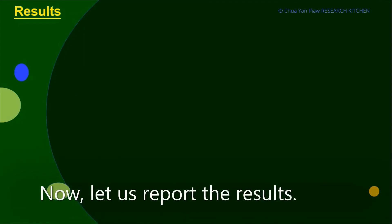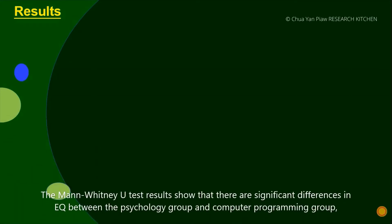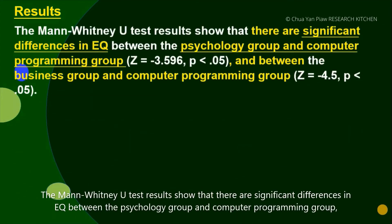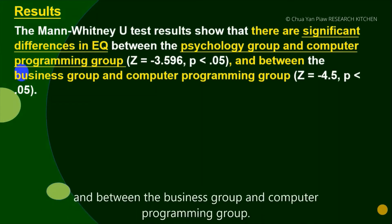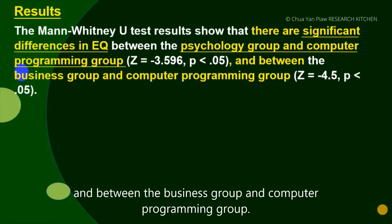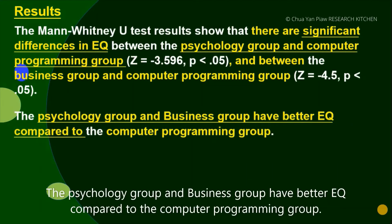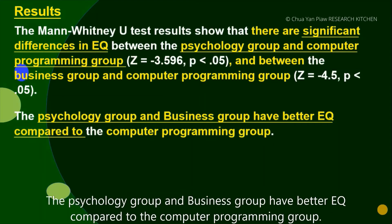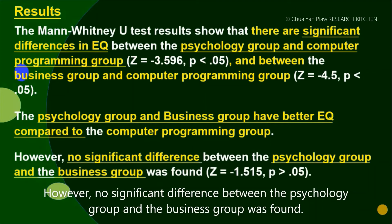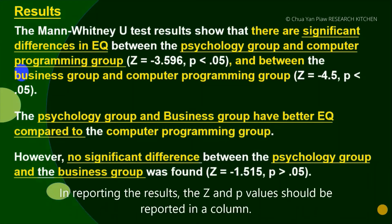Now let us report the results. The Mann-Whitney U-test results show that there are significant differences in EQ between the psychology group and computer programming groups, and between the business group and computer programming groups. The psychology group and business group have better EQ compared to the computer programming group. However, no significant difference between the psychology group and the business group was found. In reporting the result, the Z and P values should be reported in a column.